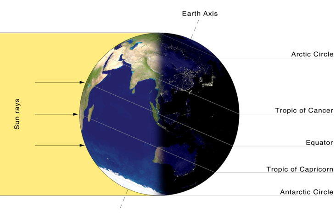The 687-day orbit of Mars around the Sun — almost twice that of the Earth — causes its summer and winter solstices to occur at approximately 23-month intervals.